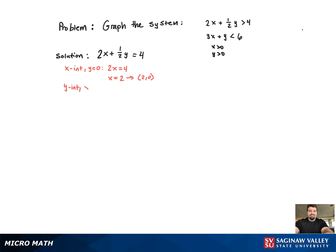Now for the y-intercept, plug 0 in for x. And when we work that out, multiply both sides by 2, we get y equal to 8, which produces the point (0, 8).